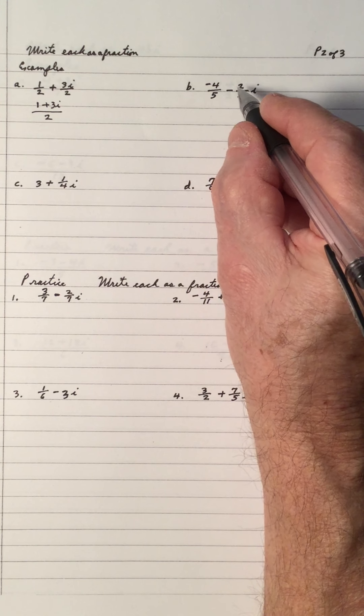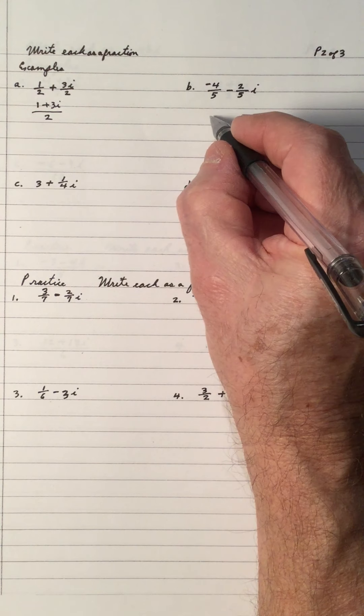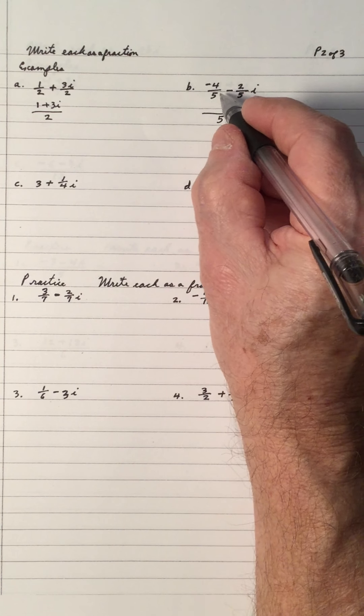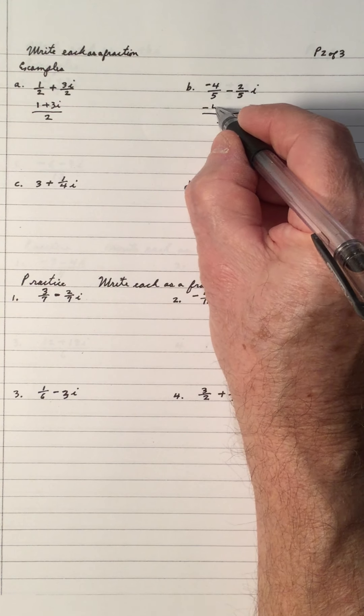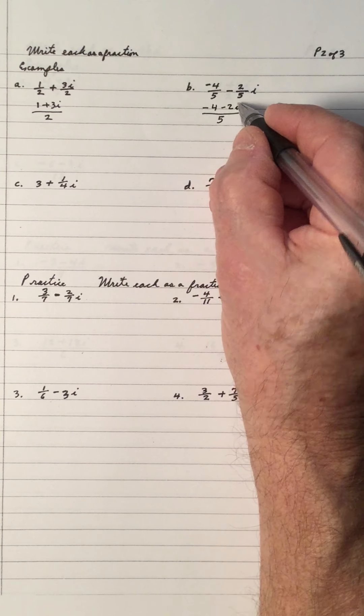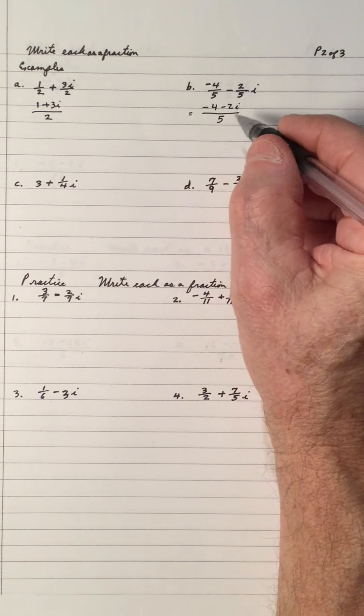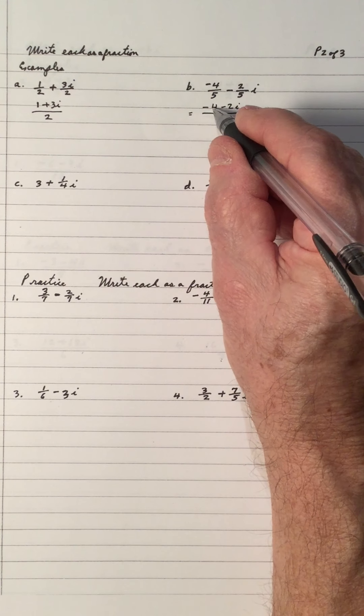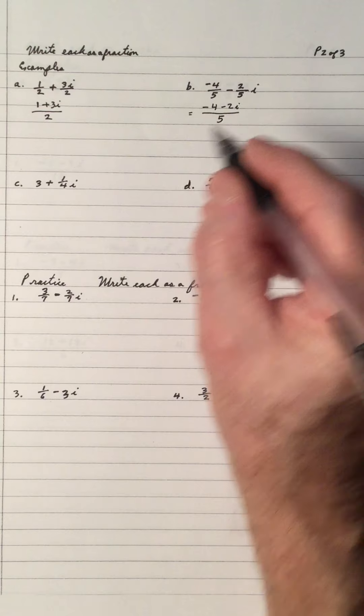Again, we're going to add these to a fraction. There are two fractions right now. The common denominator is 5. So, negative 4 subtract 2i as one fraction. Because when we add fractions, we need a common denominator. But we can't add these numbers because one is real and one is imaginary.